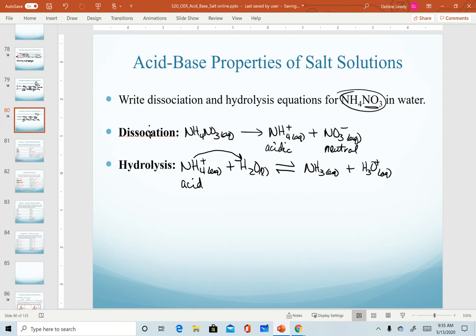We verify that we have a balanced equation. We have a plus one on the reactant side. That means we have to form hydronium to get the plus one on the product side. Ammonium nitrate is predicted to be an acidic salt.